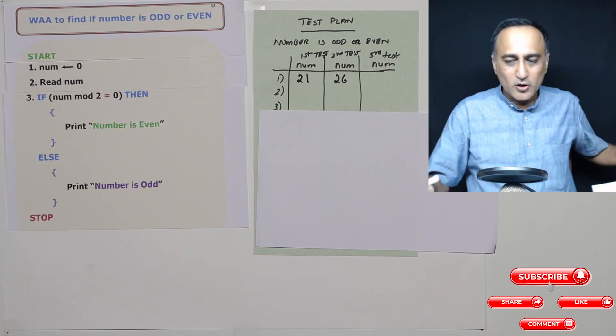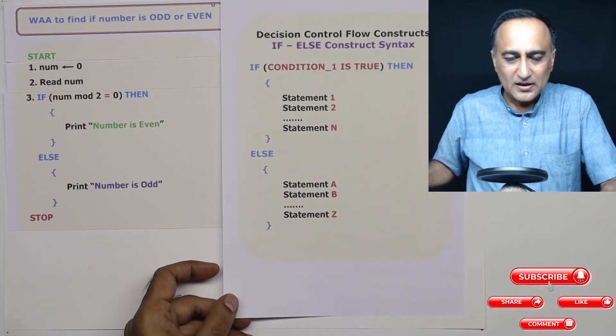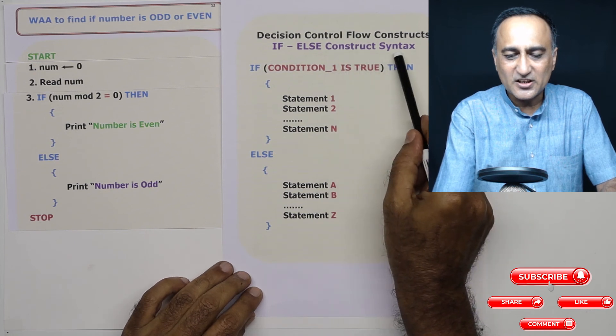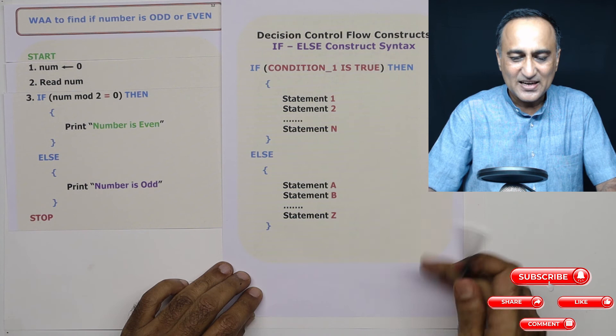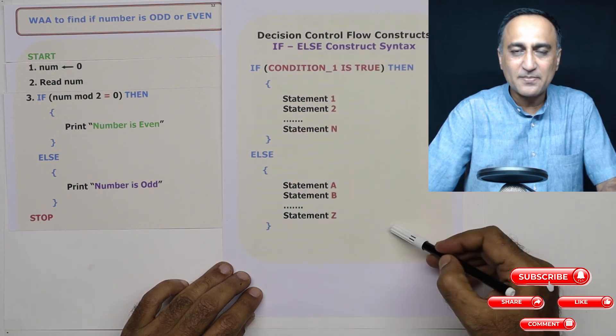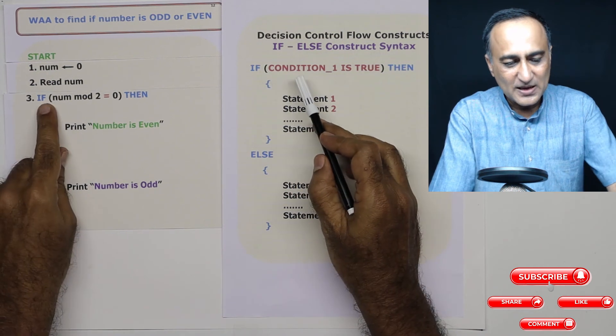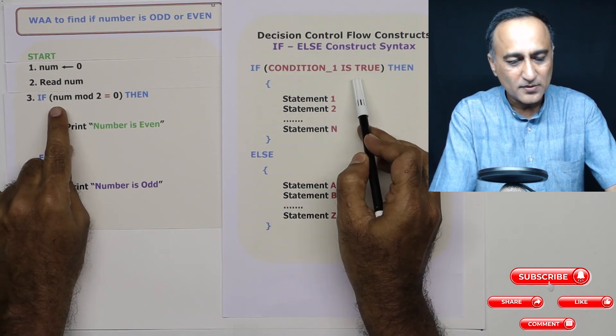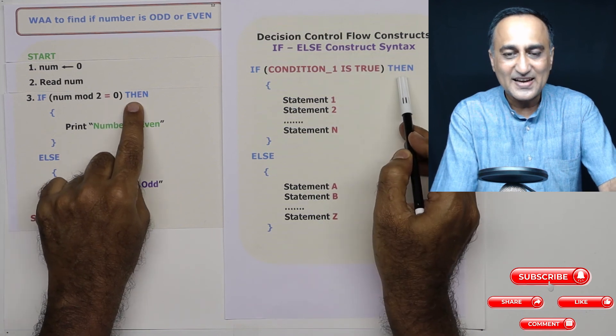So if you want to look at the general syntax or the general construct of the if else statement, it will look something like this. So this is the general statement of the if then and else. So if same here condition one is true, that is represented by num mod two equal to zero, then is written as it is.